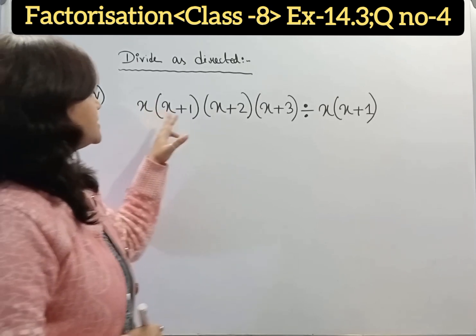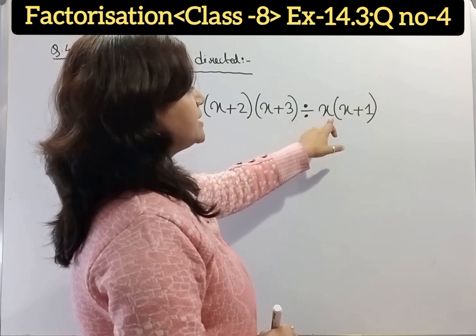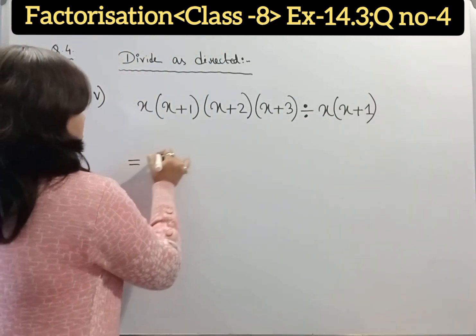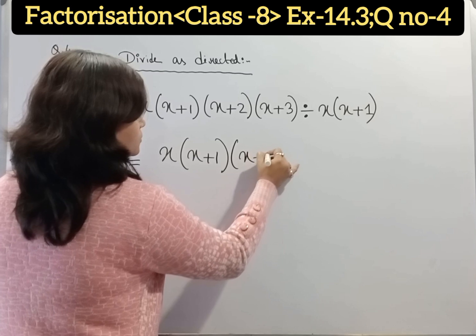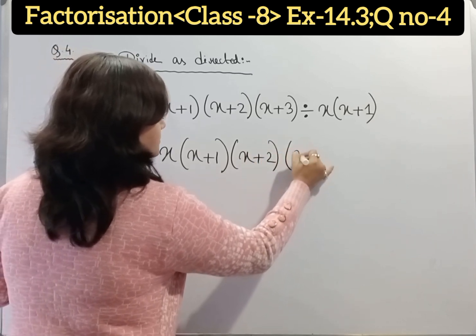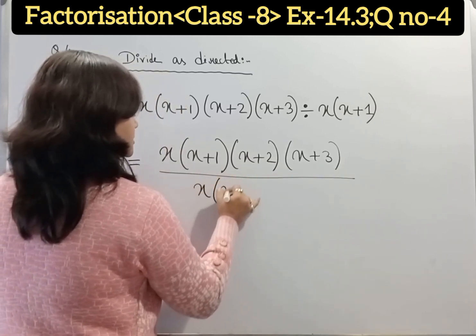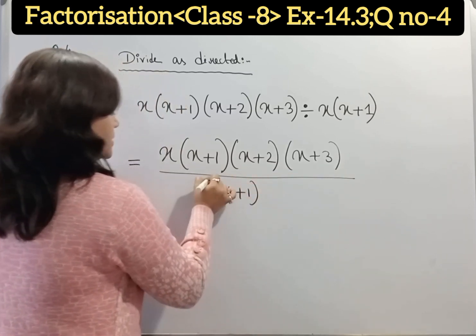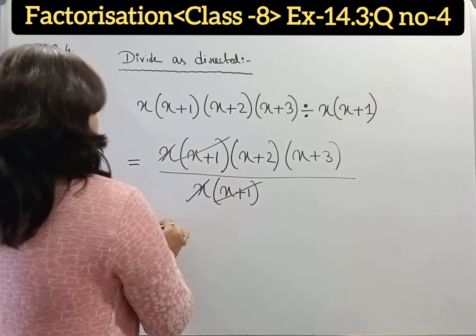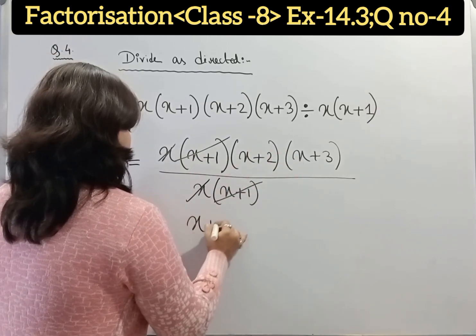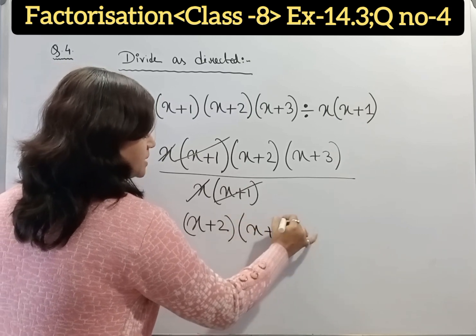Question number 5: x times (x + 1) times (x + 2) times (x + 3) divided by x times (x + 1). Now, x will get cancelled and (x + 1) will get cancelled. So our answer is (x + 2) times (x + 3).